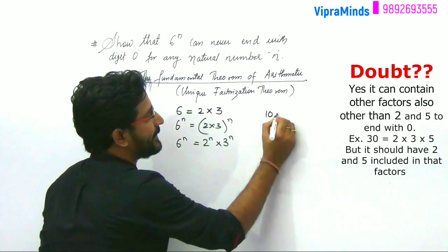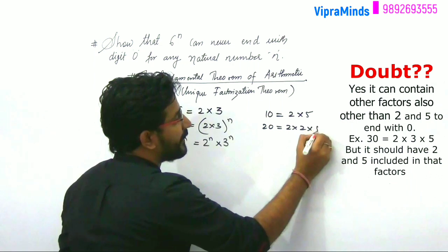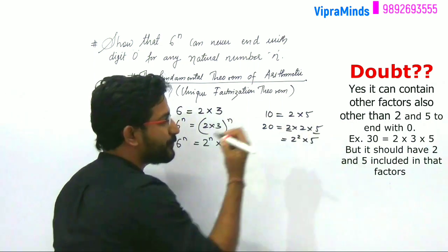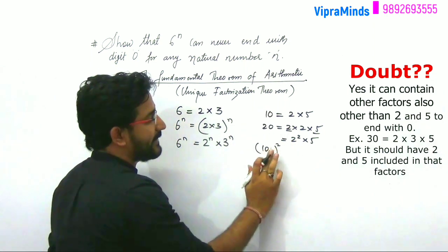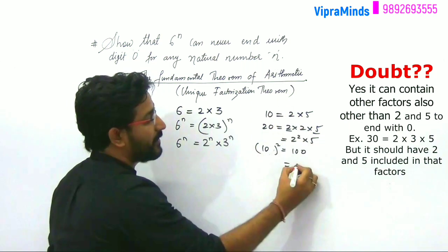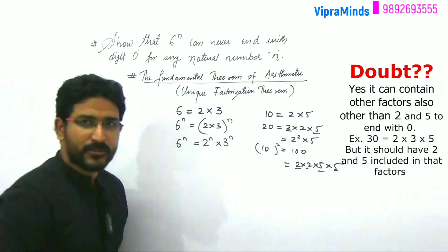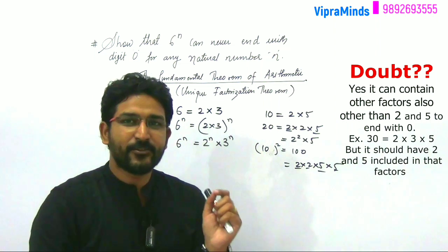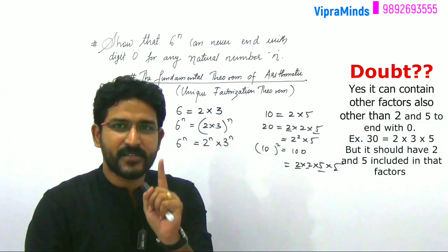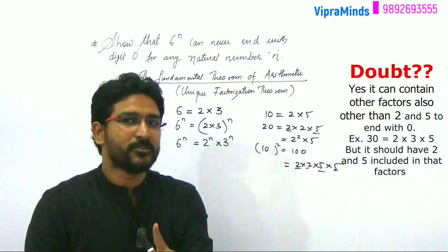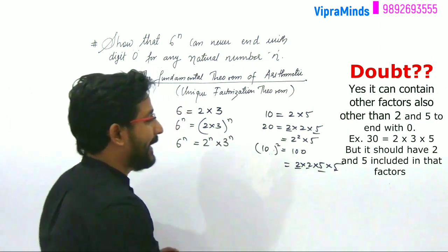For example, 10 = 2 into 5. If we talk about 20, it is 2 into 2 into 5, that is 2 squared into 5 — so both 2 and 5 are factors here. Take 100: it is 10 squared, so 2 squared into 5 squared — again it contains both 2 and 5. So for any number to end in 0, its factors must include both 2 and 5.